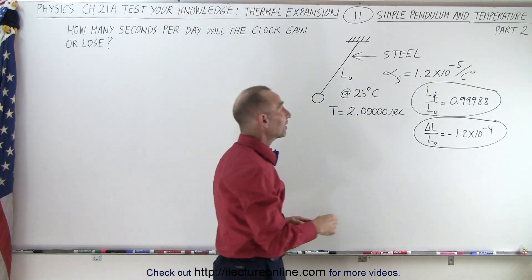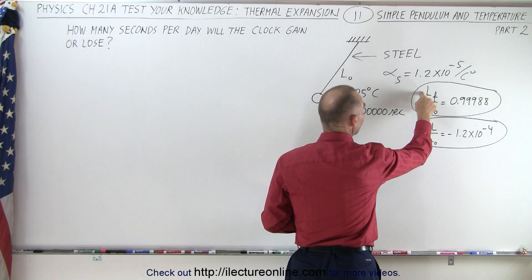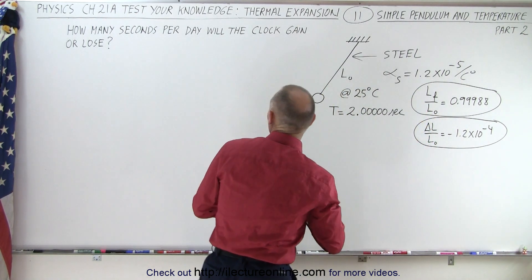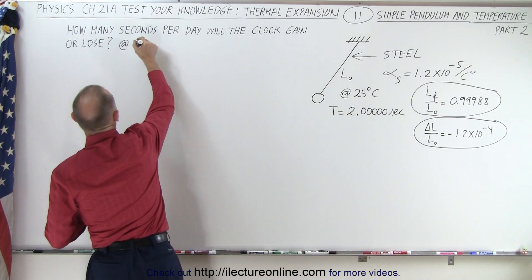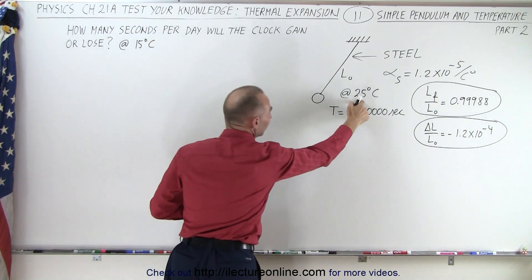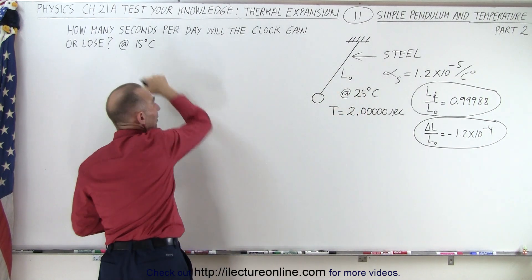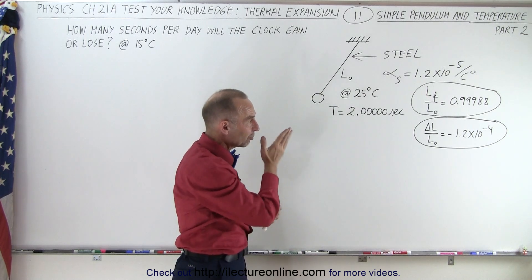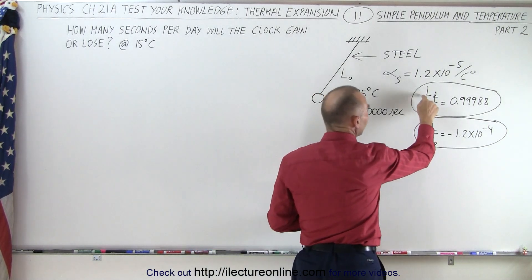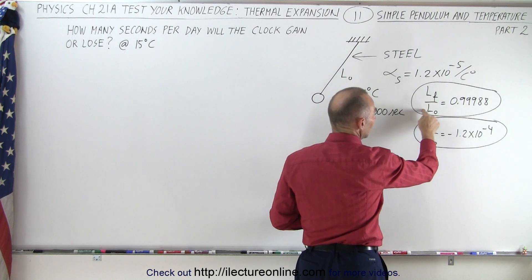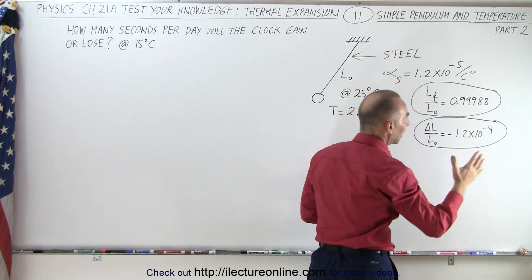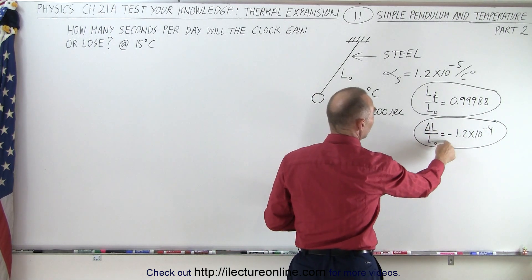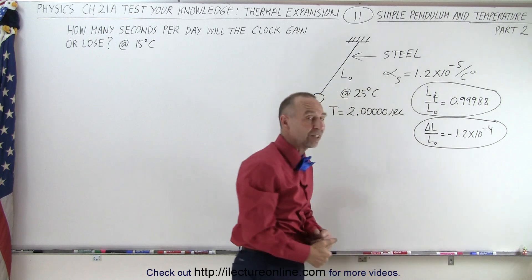In the previous video we found that the ratio of the final length to the original length — since the temperature went from 25 degrees down to 15 degrees centigrade — means the pendulum will shrink, causing it to swing faster. The final length over the initial length is 0.9988, and the ratio of the change in length to the original length was negative 1.2 times 10 to the minus 4.